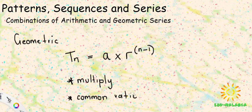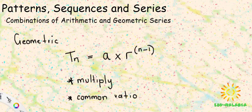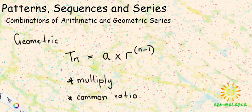If any of that is unclear, please go back to the other videos on this channel where we introduce arithmetic sequences and series and geometric sequences and series. So what we're going to do today is look at a combination of both of these kinds of series. A combination series is when you don't just have one kind of series but have both kinds. It's slightly more complicated because first you have to be able to identify that you are looking at a combination series.